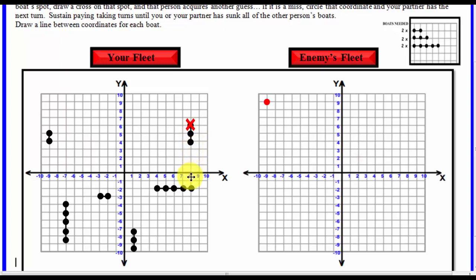So he says, I would like coordinates 7, 6, because he thinks it might be horizontal. Ah, it's a miss. So since he misses, it comes back to me.